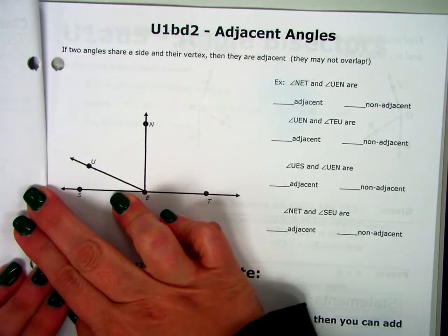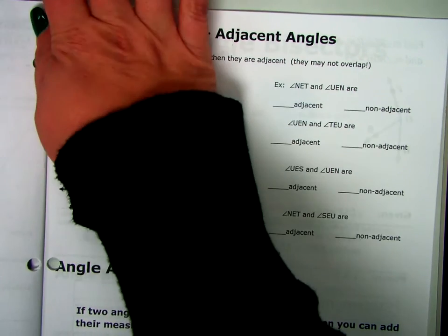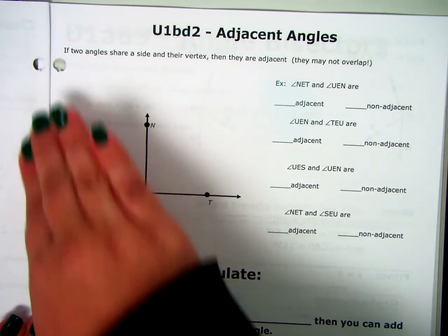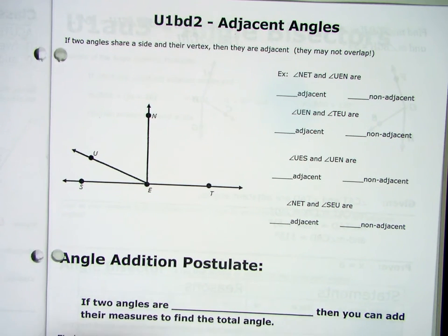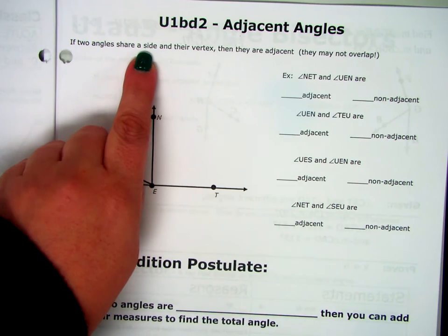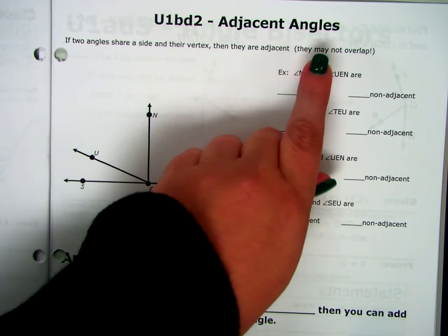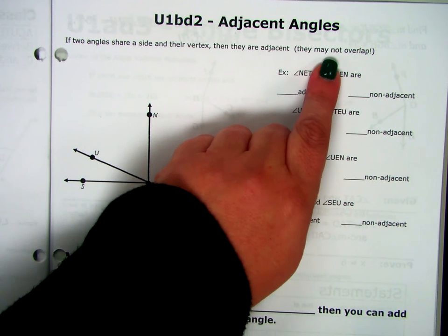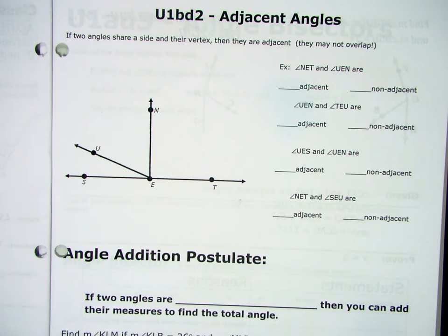Today we're going to look at adjacent angles. Does anybody know the word adjacent? Right next to. Okay? Right now I'm next to my desk. You're next to whoever you're sitting next to. So a lot of times we'll get confused. When I look up here it says two angles are adjacent if they share a side and their vertex. And then I know it's in parentheses, but it's super important they may not overlap. So one can't be on top of the other.